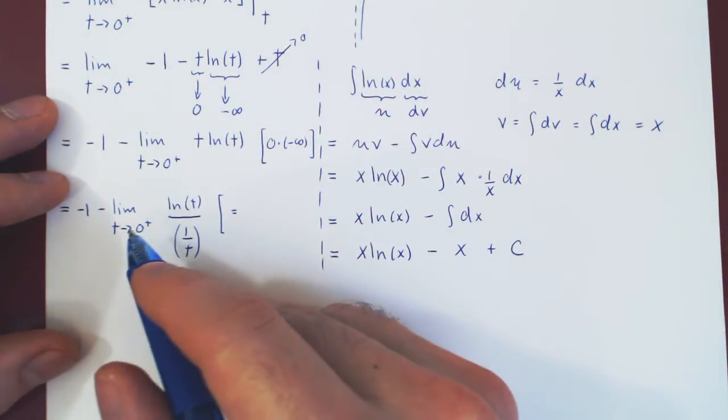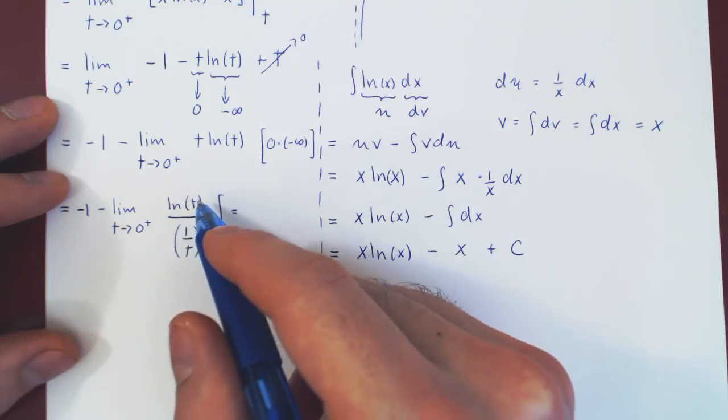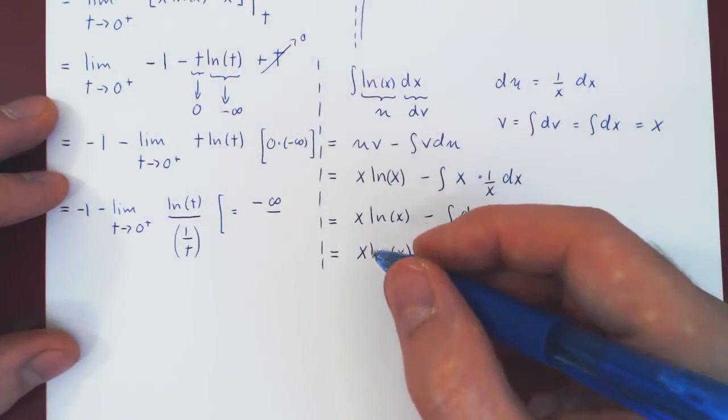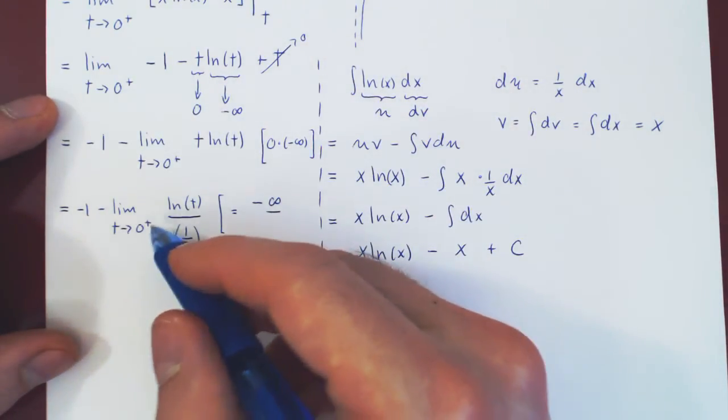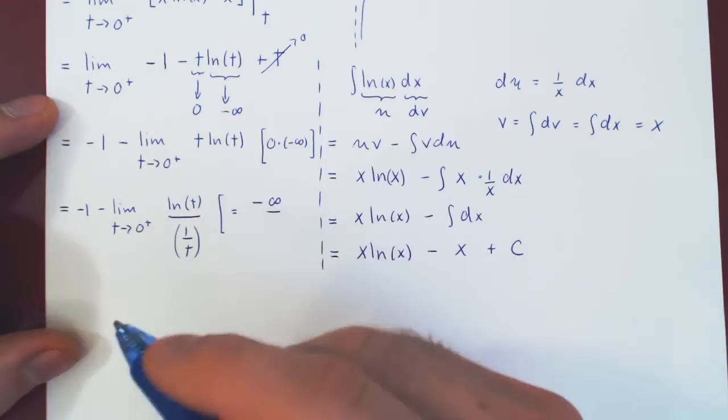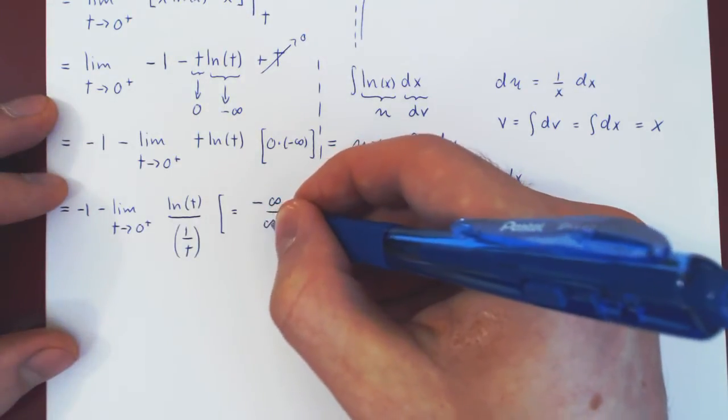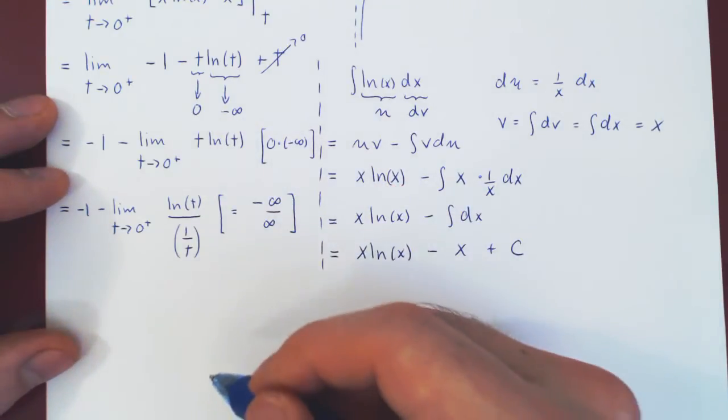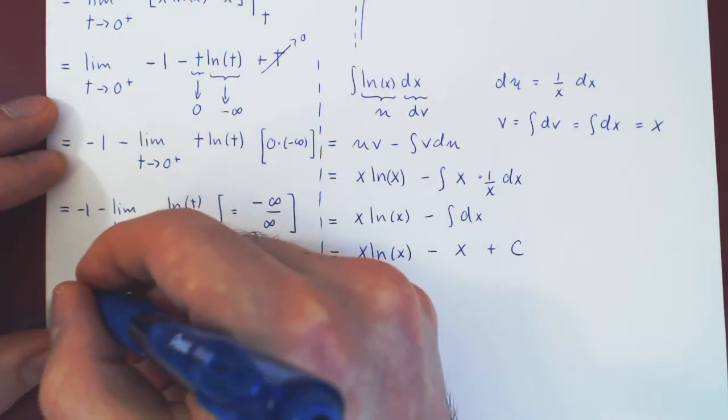As we have just said, as t approaches 0 from the right, ln of t will approach negative infinity over, as t approaches 0 from the right, 1 over t will approach positive infinity, as 1 over something small is something big. Now that we have a negative over positive infinity, we can simply use L'Hopital's Rule.